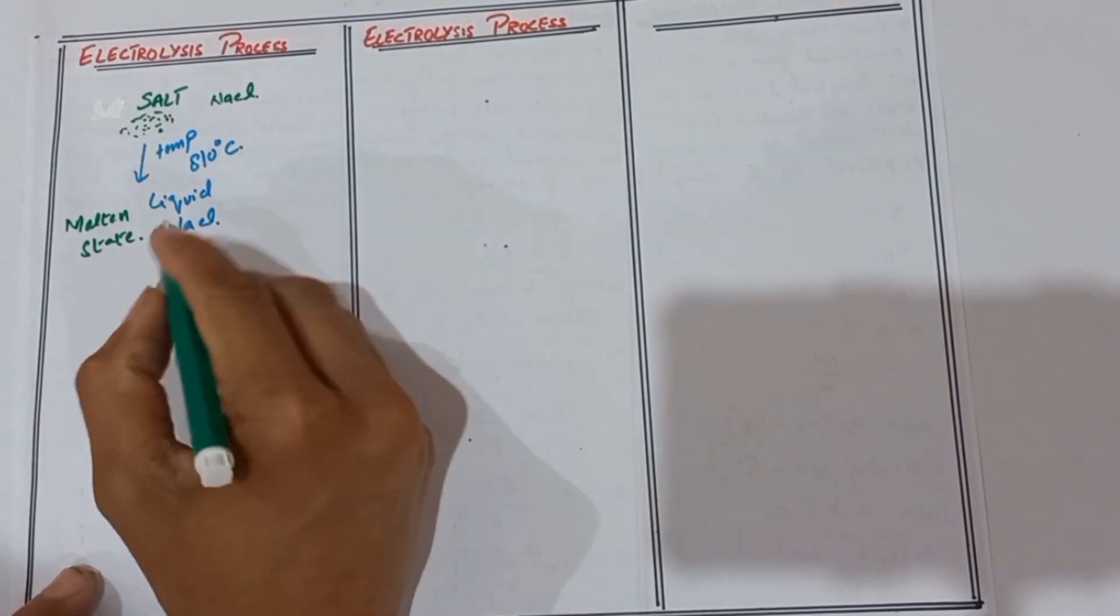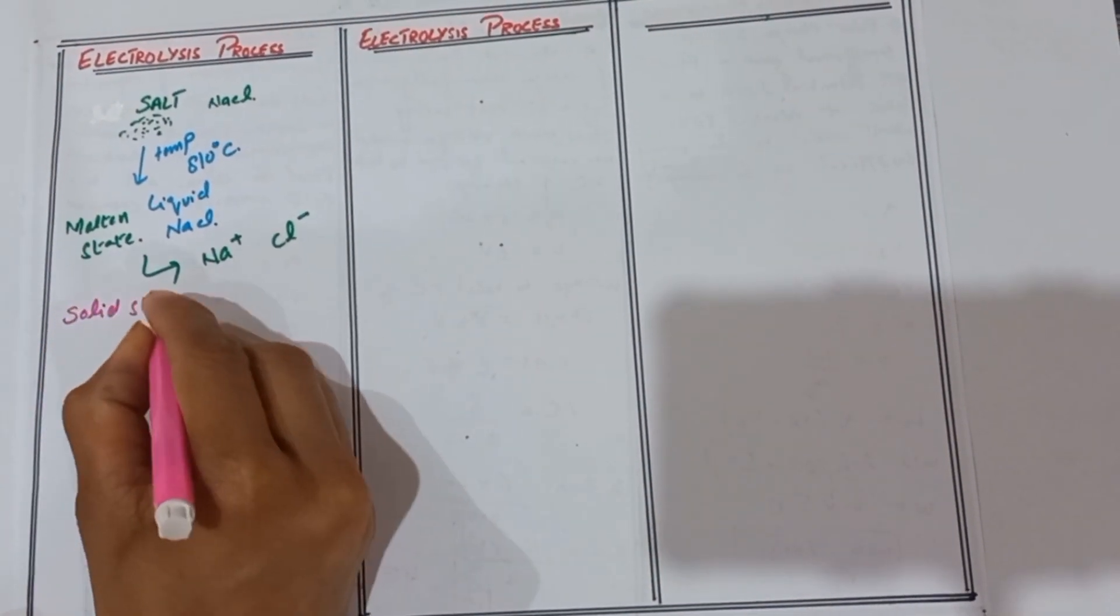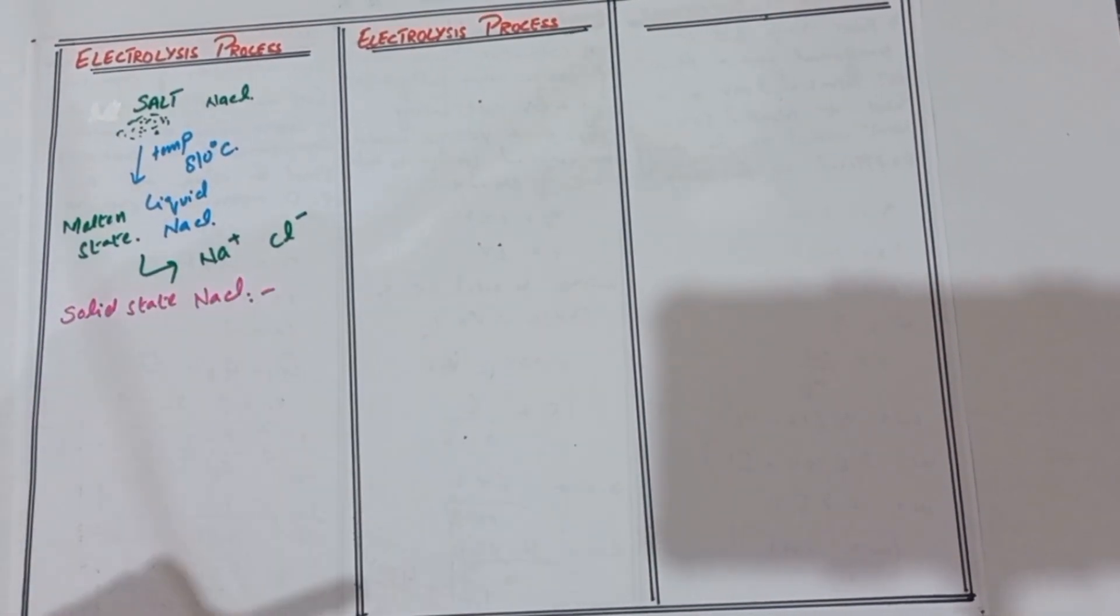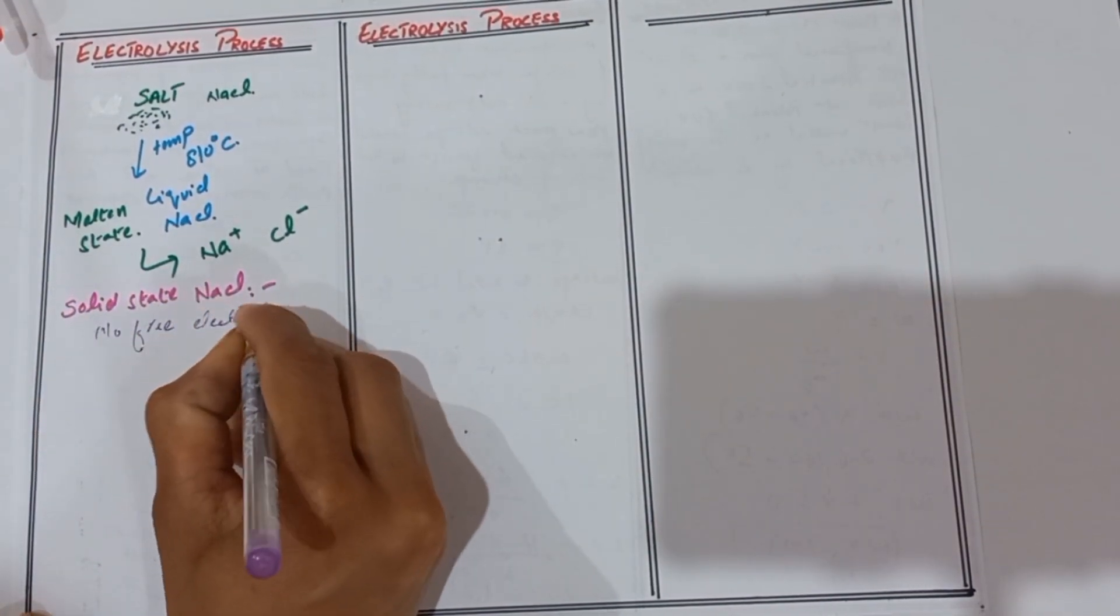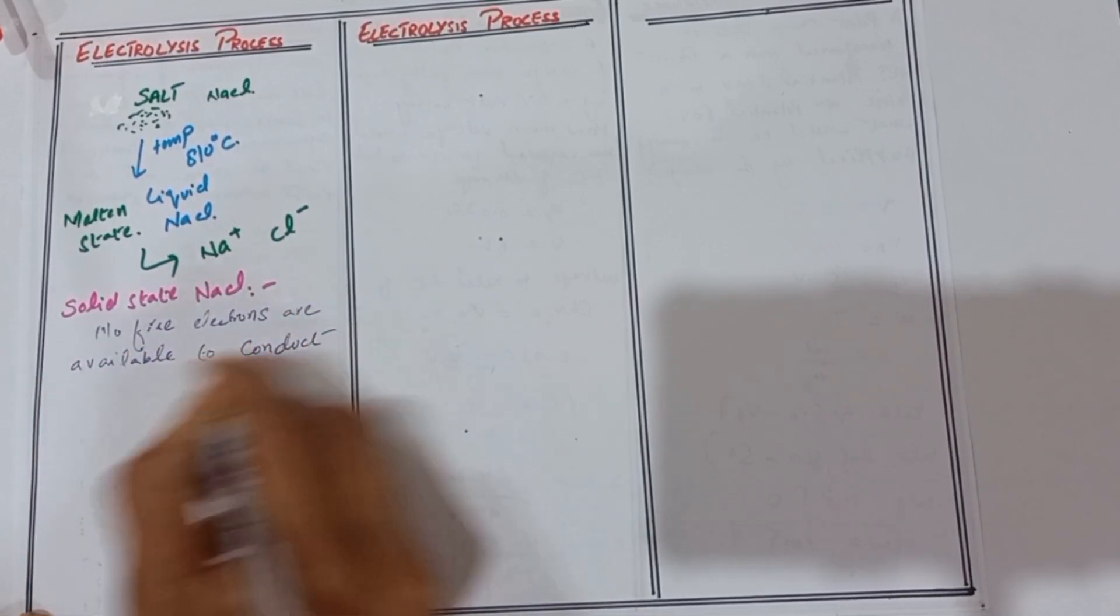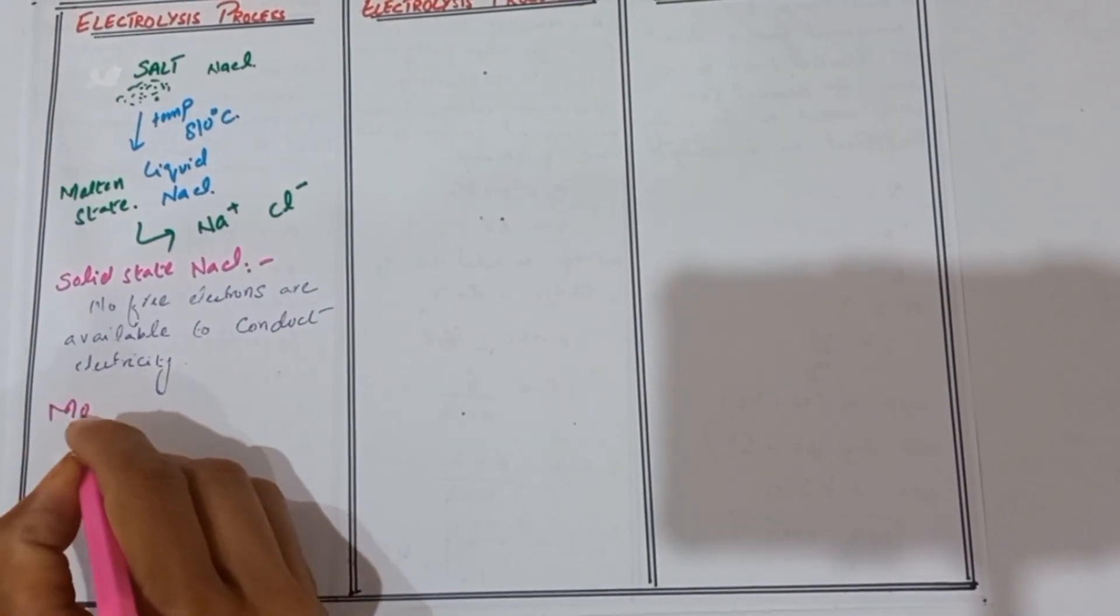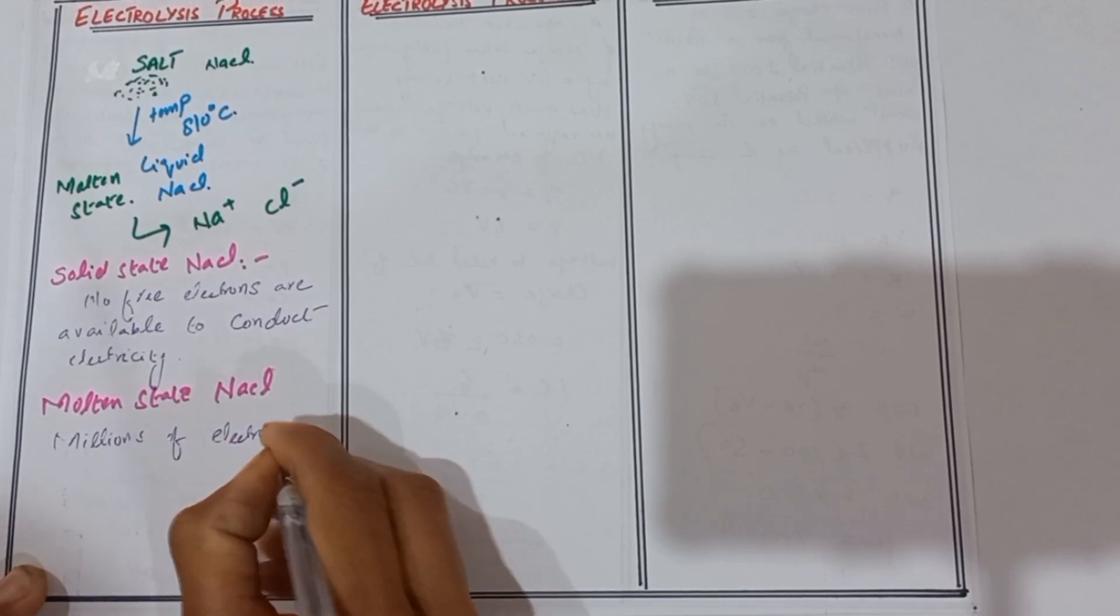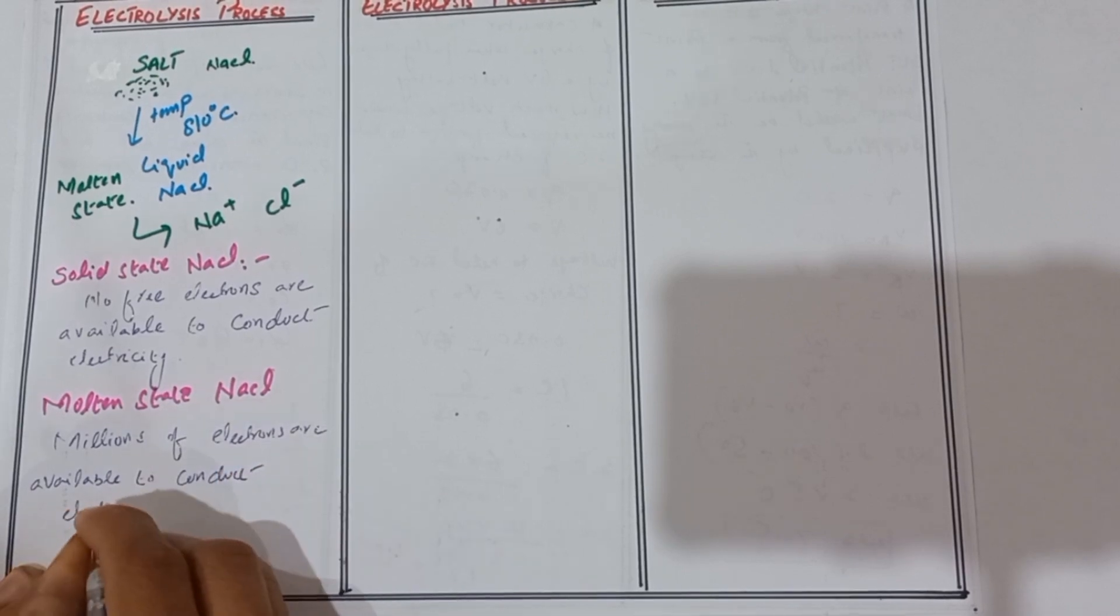This converts into liquid sodium chloride. In the solid state of sodium chloride, no free electrons are available to conduct electricity. However, in the molten state of sodium chloride, millions of electrons are available to conduct electricity.